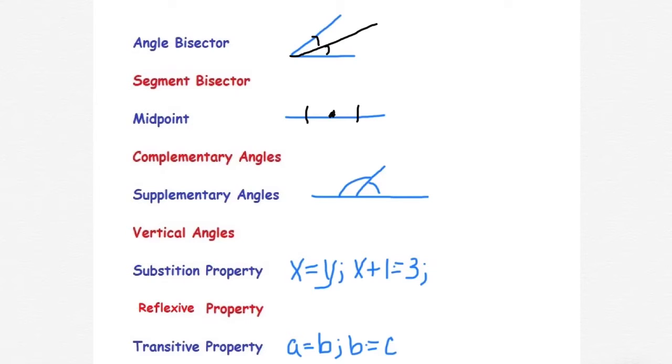Supplementary angle means that there are two angles that add up to 180. So if I have 120 this side and 60 on the other and they add up, they are supplementary angles.